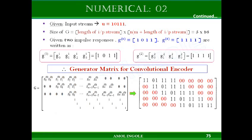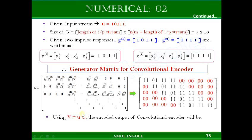Once you have the generator matrix ready, you can find the output of the convolution encoder by multiplying the input bit string U with the generator matrix, just like we did in LBC. The output of the convolution encoder is U times G, and the multiplication is performed in modulo-2 arithmetic. Thank you.